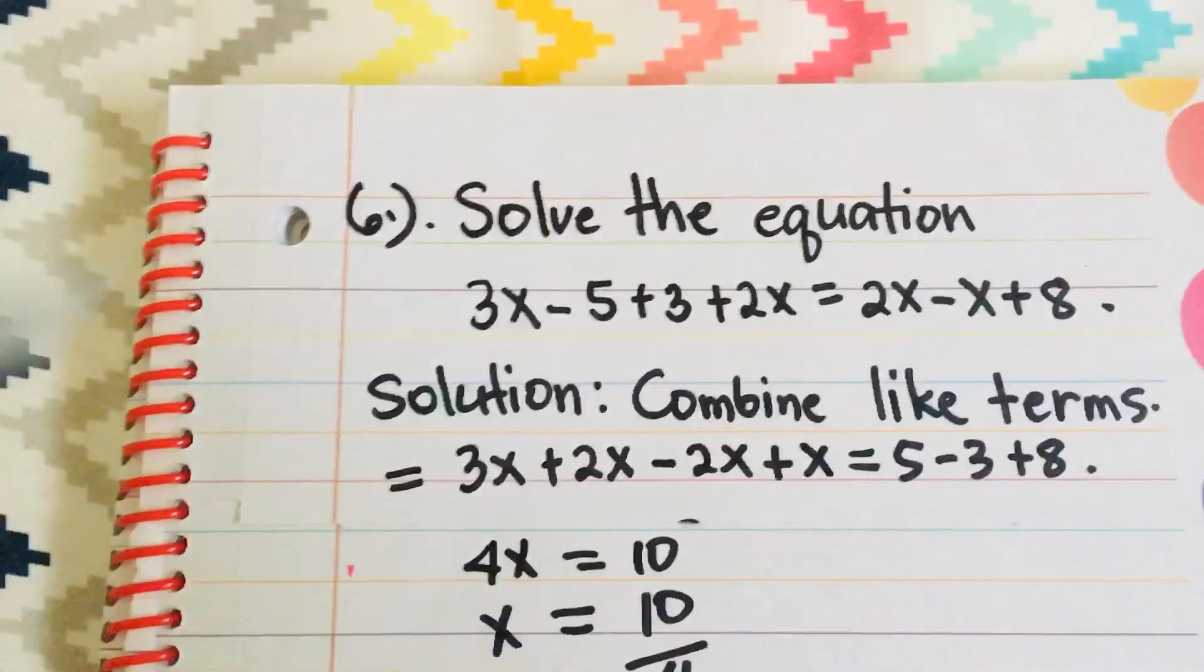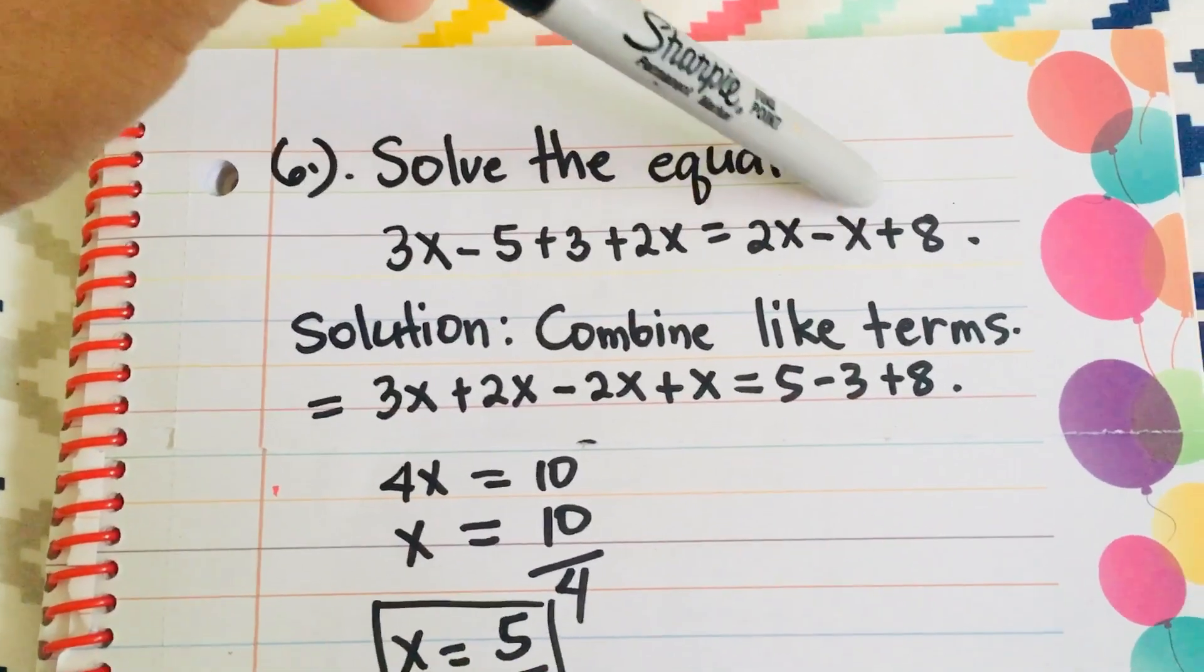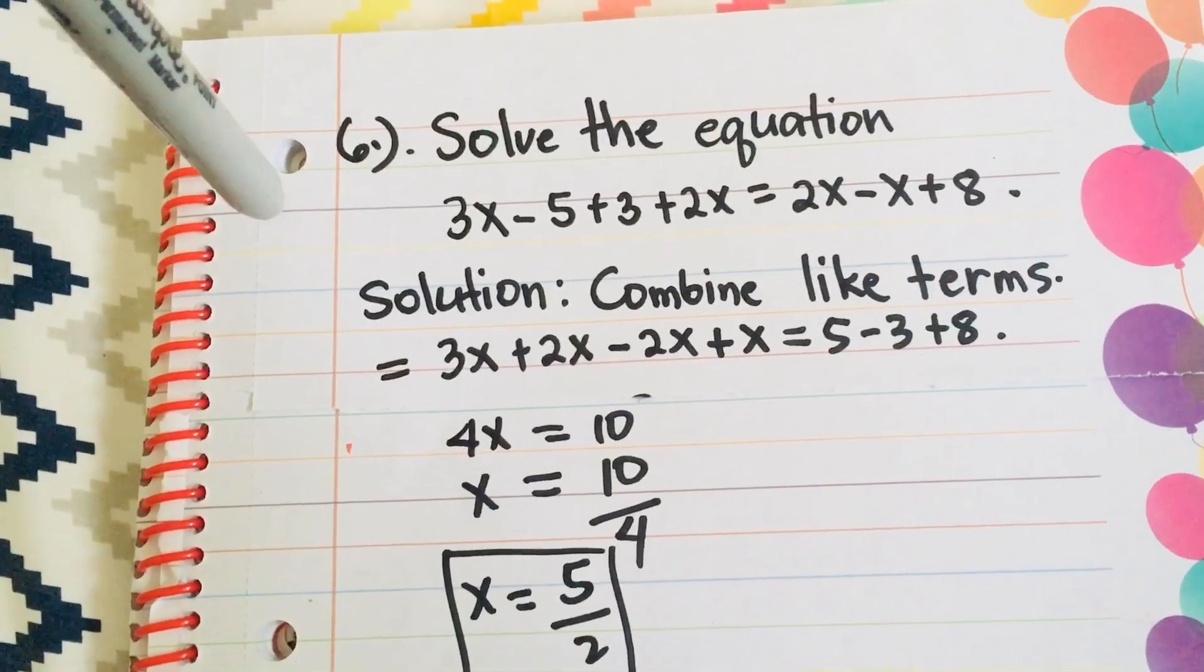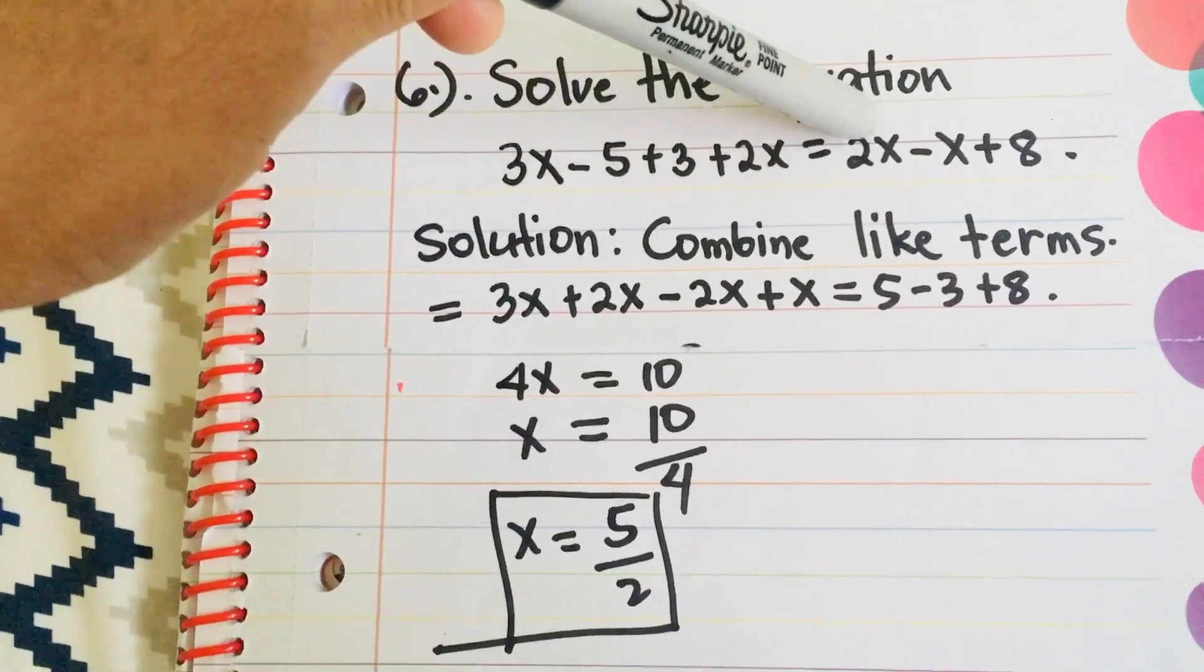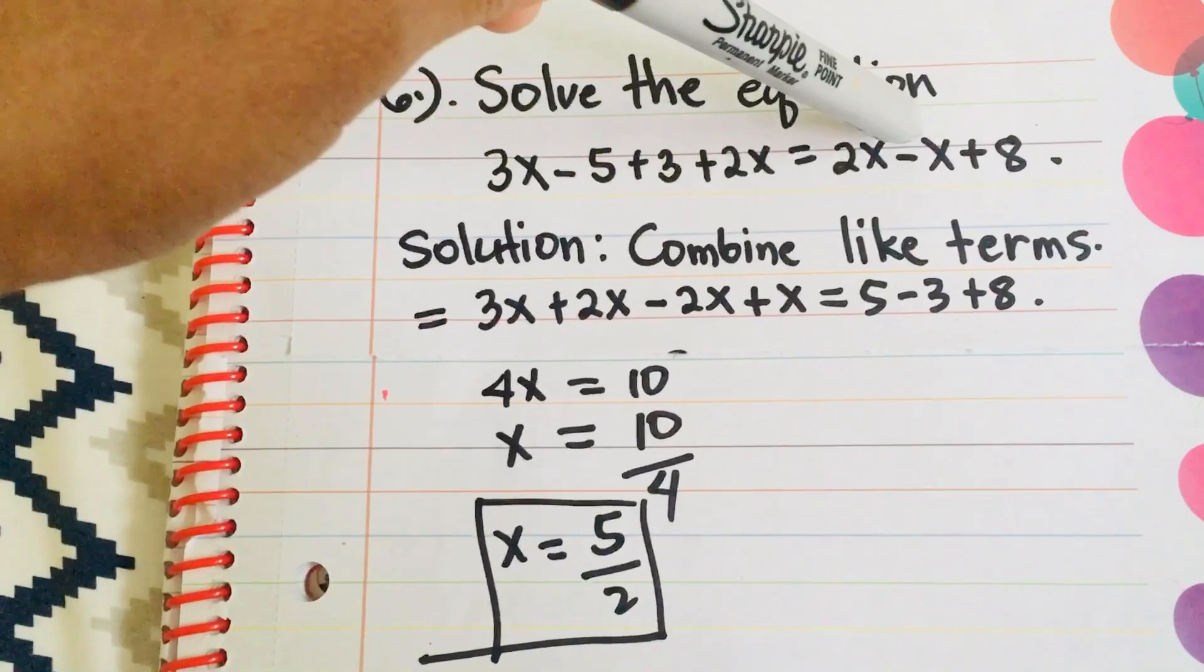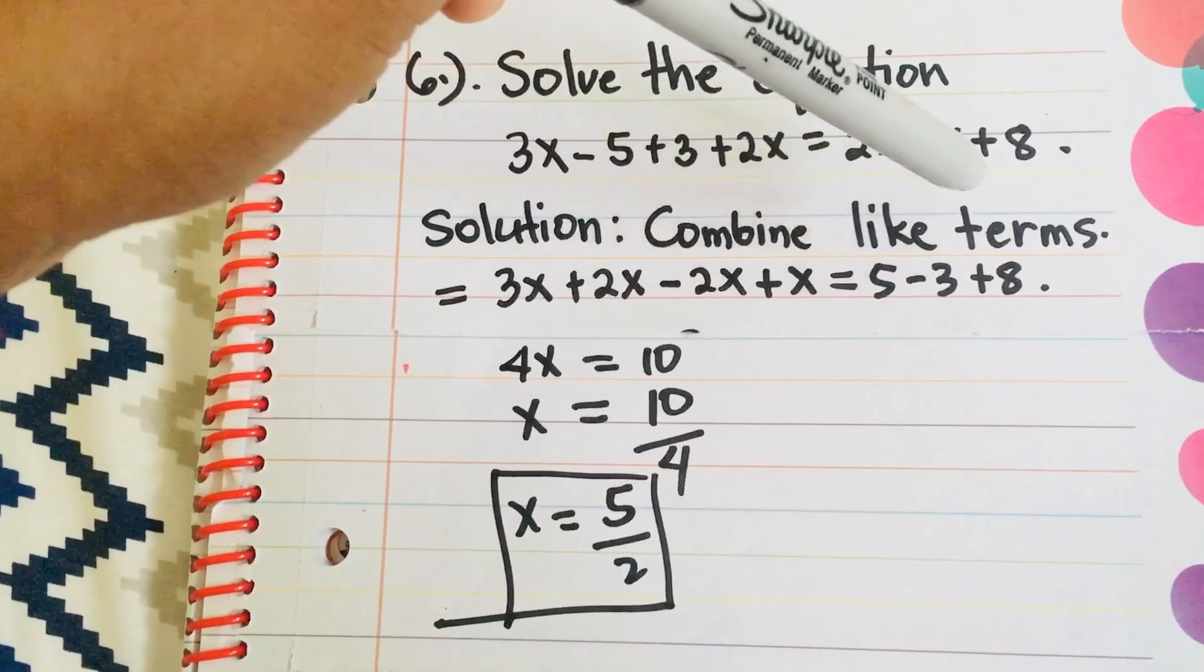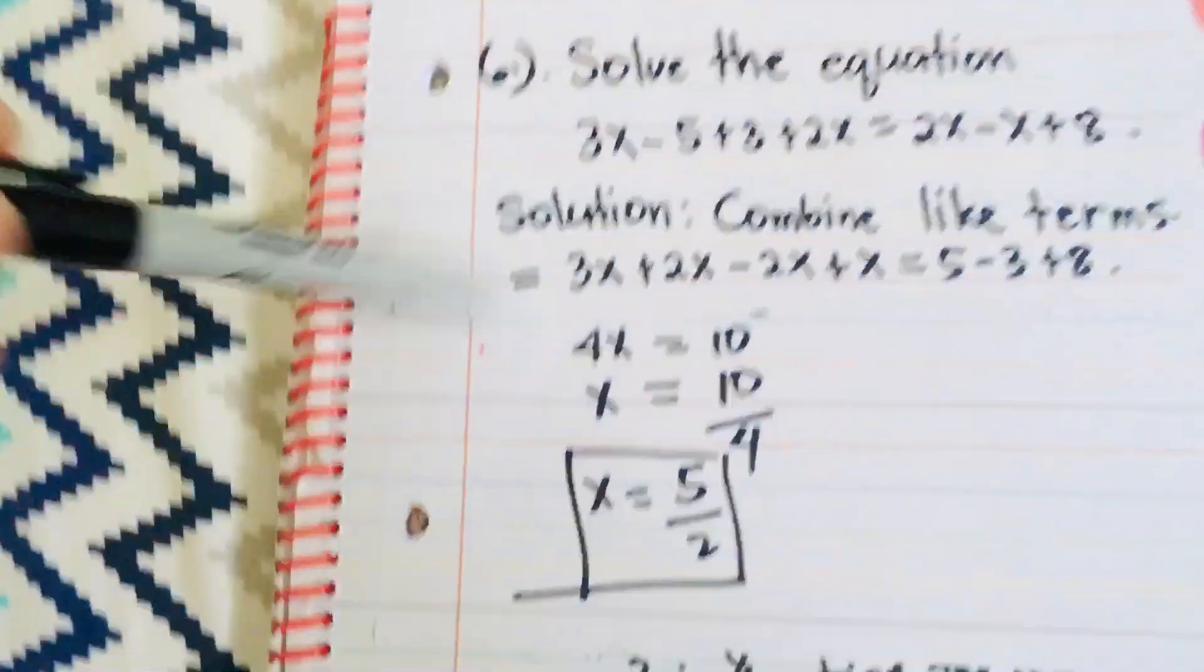Then, number 6 question. Solve the equation 3x minus 5 plus 3 plus 2x equals 2x minus x plus 8. First, you have to combine like terms. And when combining like terms, if you move the numbers on the right to the left, the sign would change. So, this one, we collect like terms. 3x plus 2x, which is this one, and 2x in here becomes negative 2x. 2x, when you move it to the left side, plus x, because here is negative, equals 5 minus 3 plus 8. So, 5 in here is negative. So, we put it as positive in here. And 3 in here is positive. So, it's going to be negative.